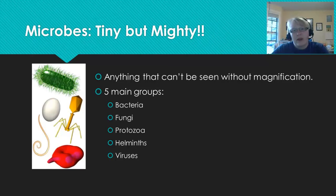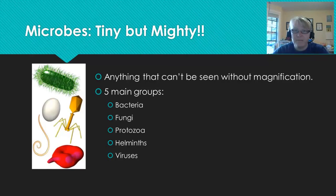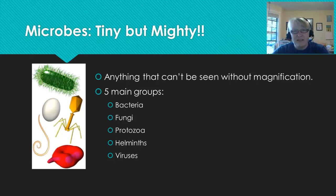Our prokaryotes are cells that lack a nucleus, and these are the bacteria — E. coli, Salmonella, Clostridium, Bacillus — basically all the organisms we're going to work with throughout the semester in lab. That's the bacteria group.